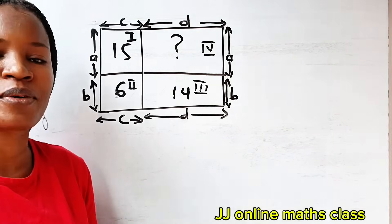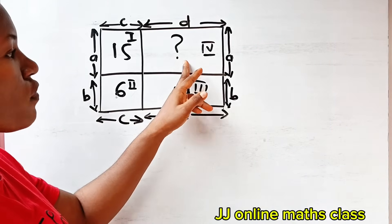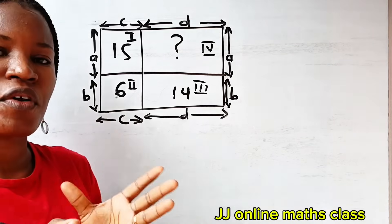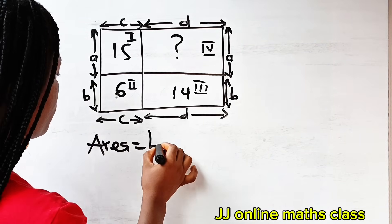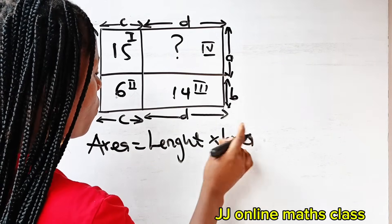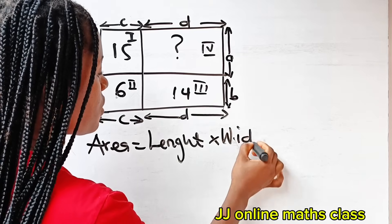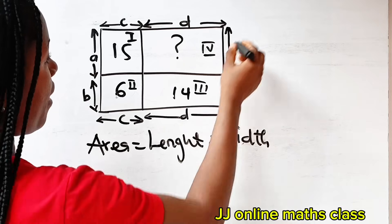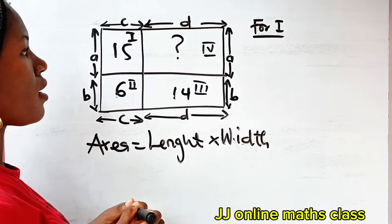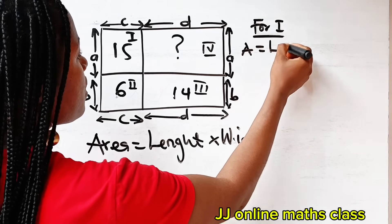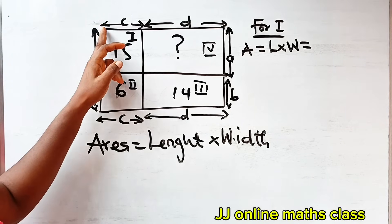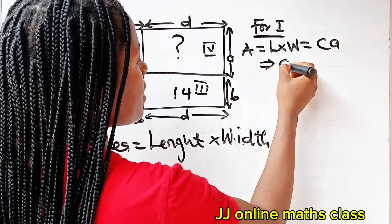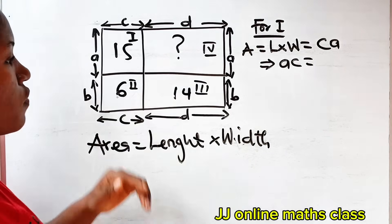Now let's think about how we are going to find the area of rectangle IV. The area of a rectangle is equal to length multiplied by width. For rectangle I, the area is length times width, which is C times A. This implies that AC is equal to 15. Let's call this equation 1.